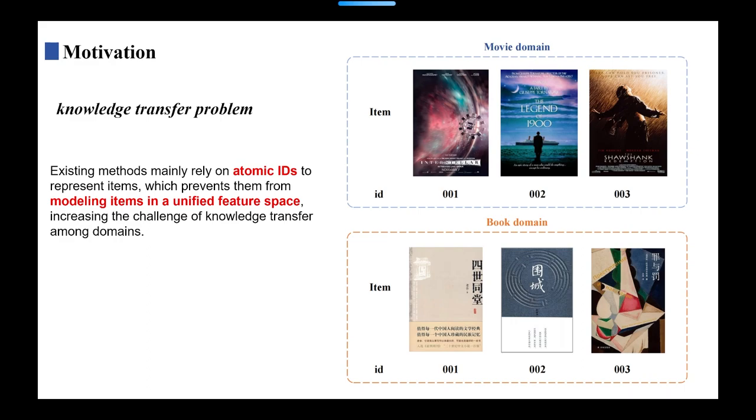Second, the knowledge transfer problem. Existing methods mainly use atomic IDs to represent items, which prevents them from modeling items in a unified feature space, increasing the challenge of knowledge transfer among domains.